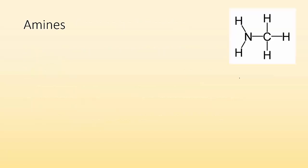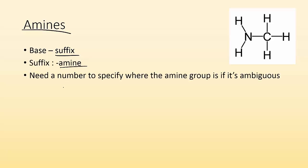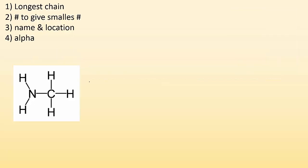So, let's take a look at some amines. Basically, you're just doing the same thing, base and suffix. And this time the suffix is amine. So, you need a number to specify where the amine group is if it's ambiguous. If it can be more in one place, then you need to say where it is.